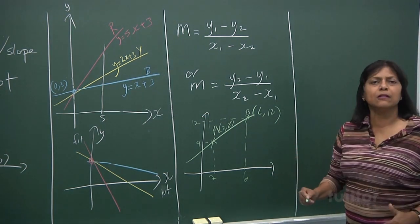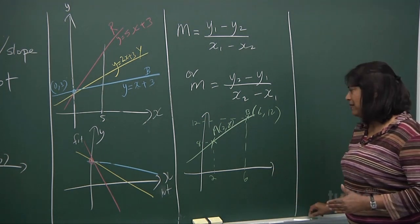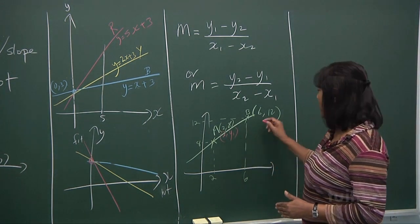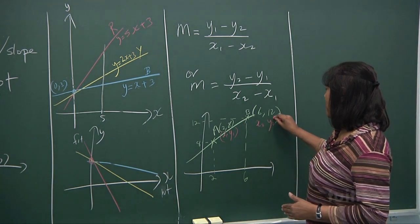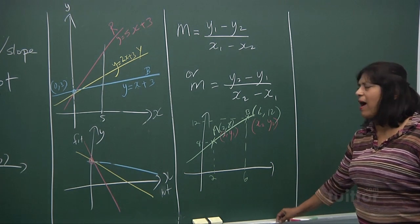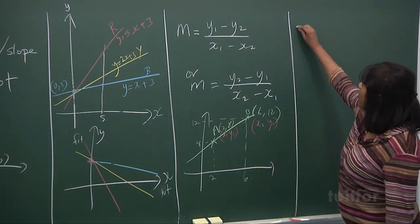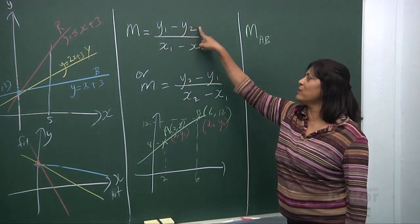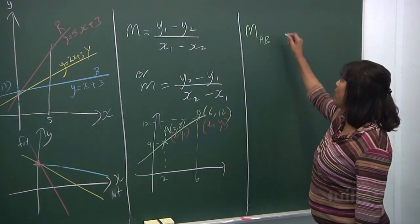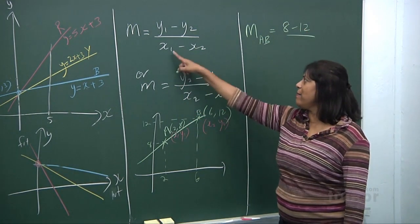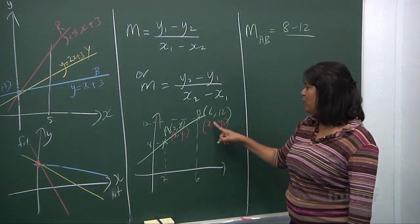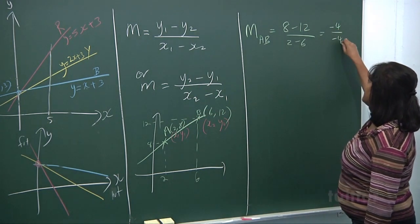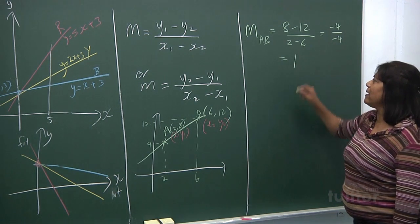I want to see the slope AB. This can be your x₁ and this is your y₁—one point. This is your x₂ and that's your y₂. The gradient of AB: if I take y₁ - y₂, that's 8 - 12, and x₁ - x₂, which is 2 - 6, what do you get? You get -4 over -4. A minus divided by a minus gives you +1.